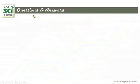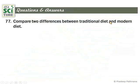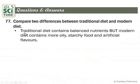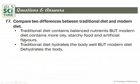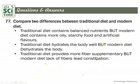Question 77: Compare two differences between traditional diet and modern diet. First, traditional diets contain balanced nutrients, but modern diets contain more oily, starchy food and artificial flavors. Second, traditional diet hydrates the body well because it has a lot of natural foods and vegetables, but modern diet dehydrates the body — once we take modern diet, we feel more thirsty because the starchy, oily food dehydrates our body.